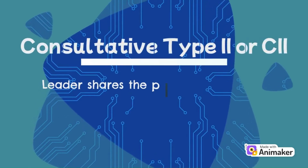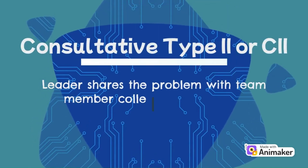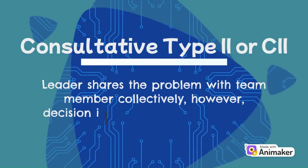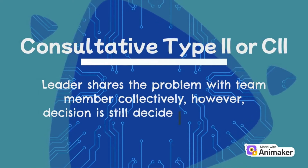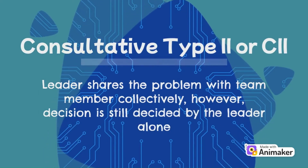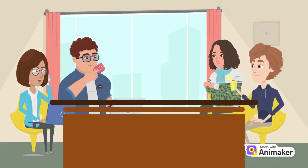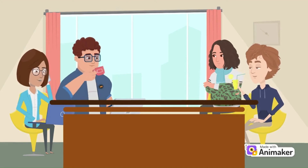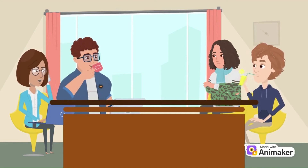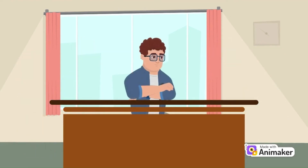Consultative Type 2, or C2, is where the leader shares the problem with team members collectively. However, the decision is still made by the leader alone. You may raise the problem in a group WhatsApp chat or in a meeting together to gather opinions and possible solutions, which may yield several similar or unique alternatives. Then you decide among those alternatives.